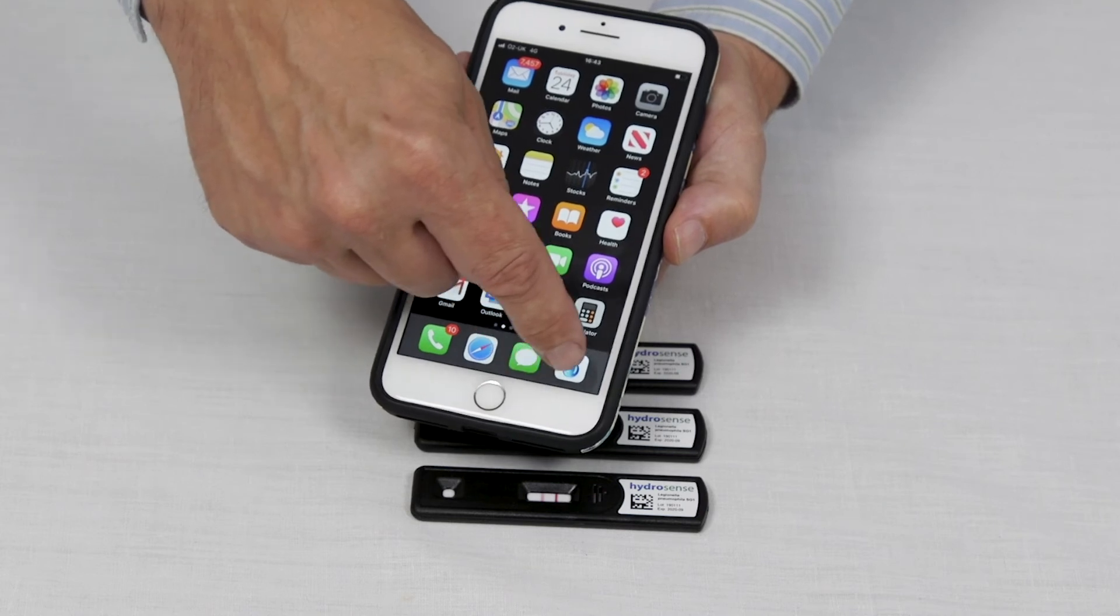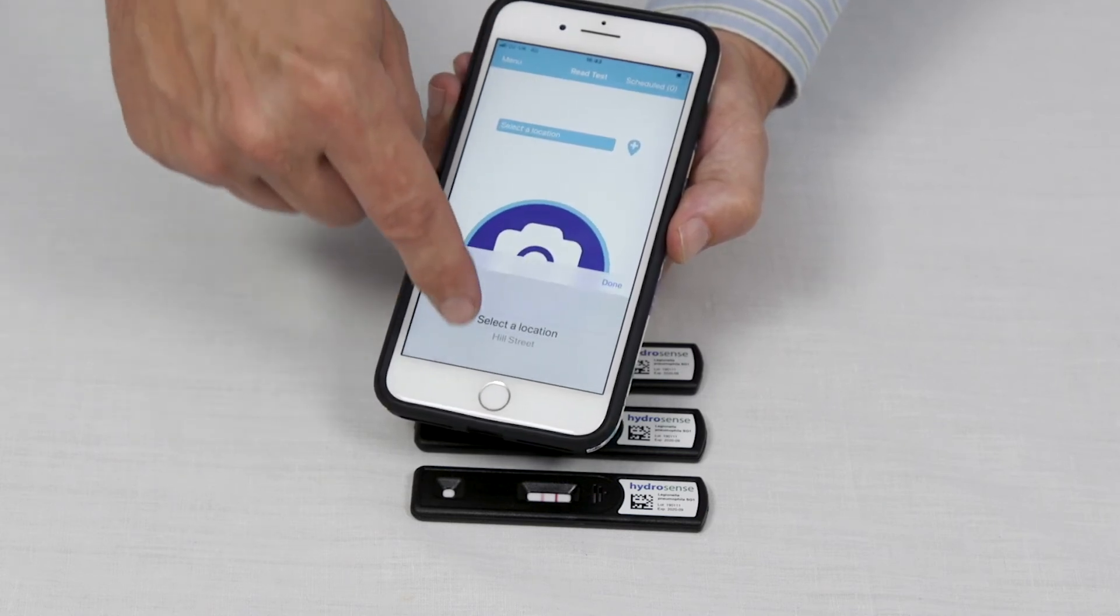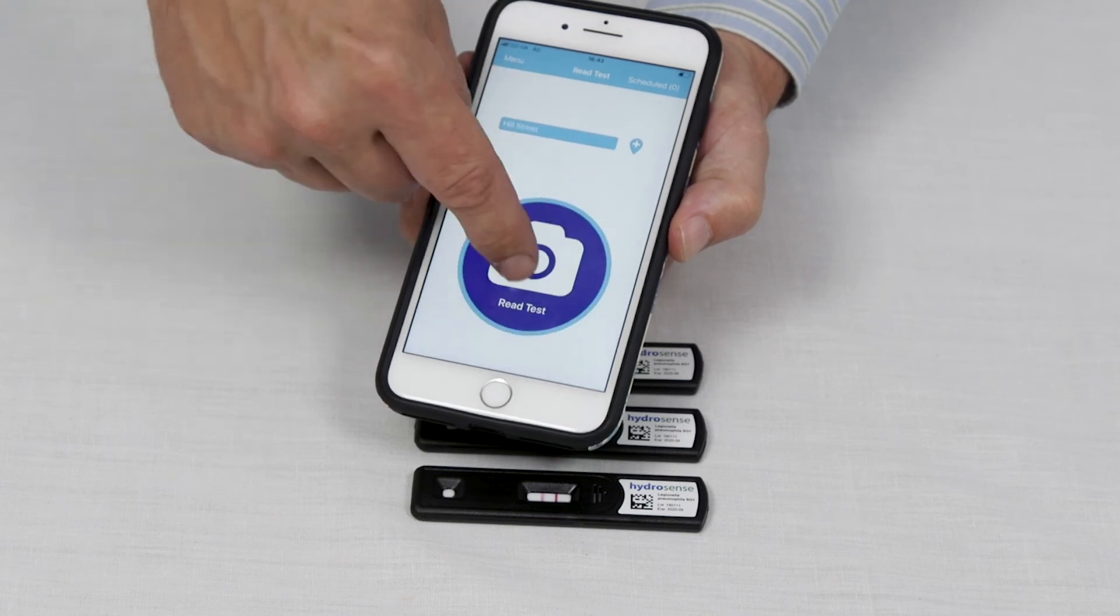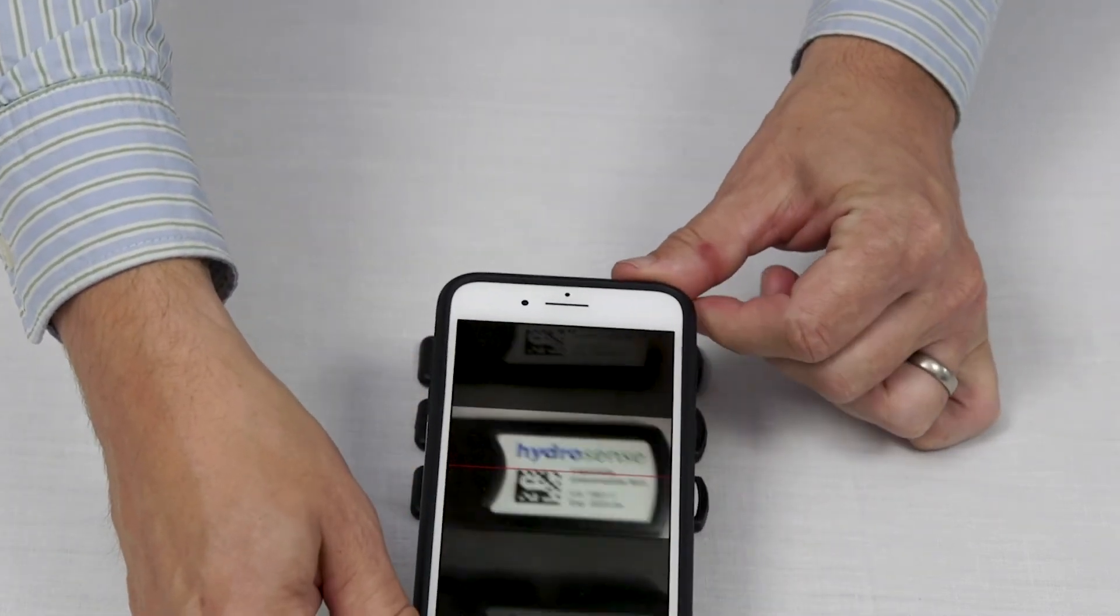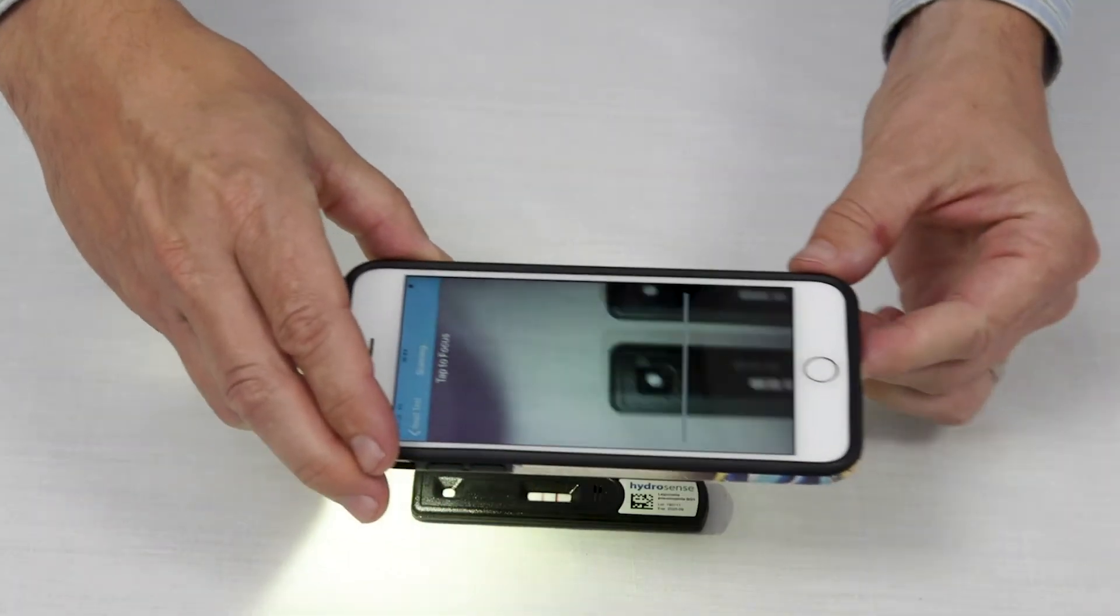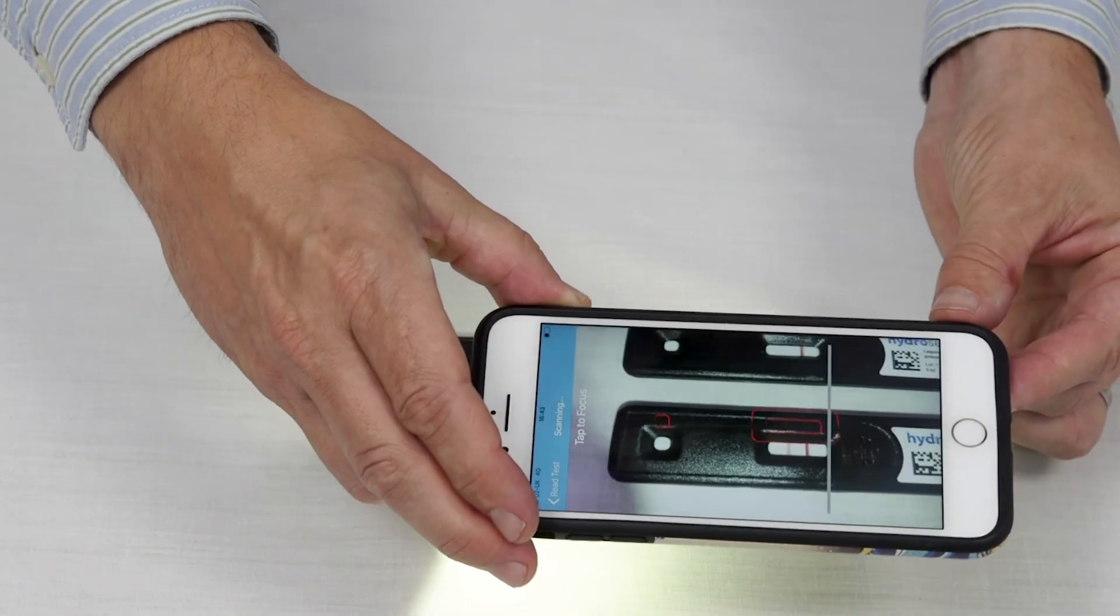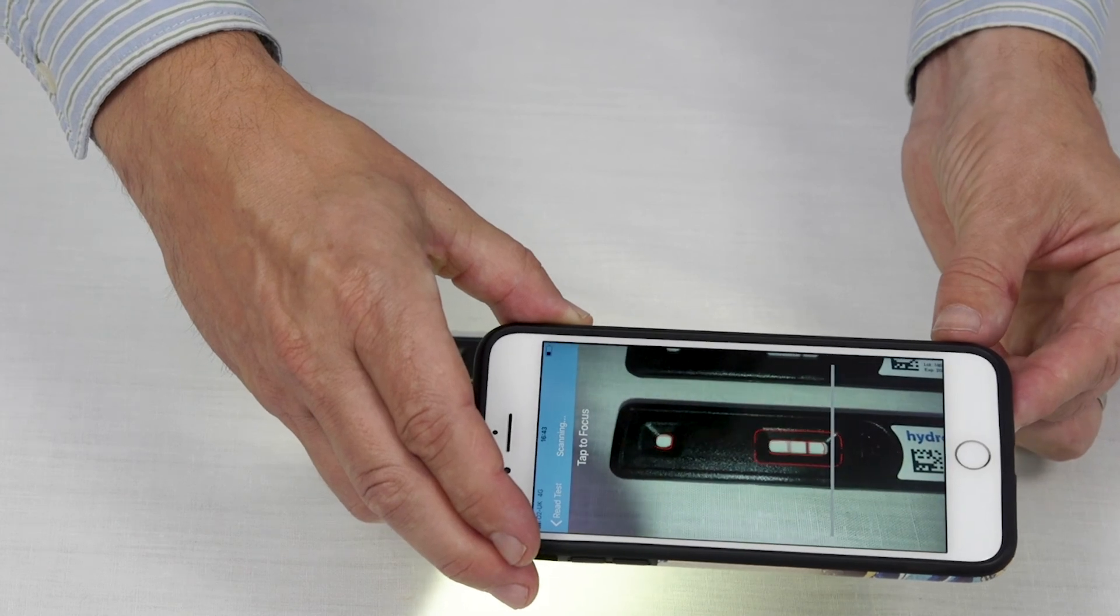To use the app, launch the app, select a pre-programmed location, and click read test. Scan the barcode and then read the test by matching up the image on the screen with the cassette.